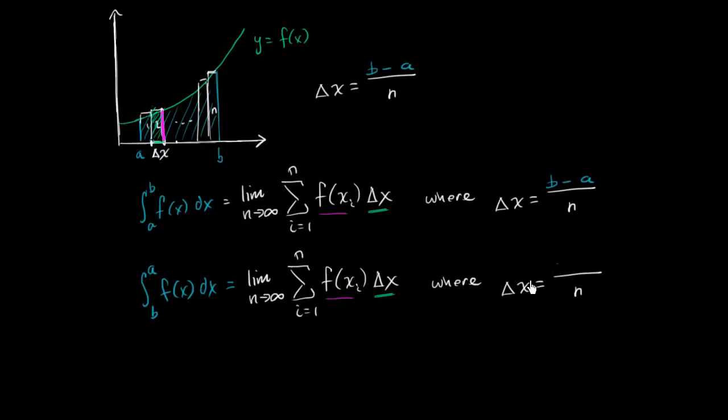It's going to be a minus b. So each of these, this value right over here, let me make these color-coded maybe. So this orange delta x is going to be the negative of this green delta x. This is the negative of that right over there.